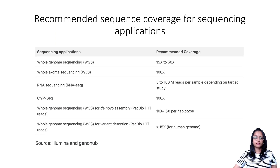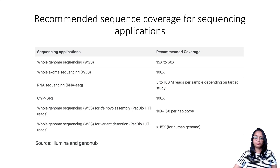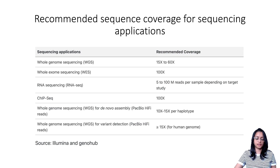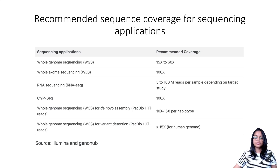Coverage will vary depending on the type of next-generation sequencing data and the research application. Generally, more coverage is needed when trying to identify rare variants — for example, detecting cancer mutations in circulating tumor DNA in the plasma of cancer patients. The appropriate coverage is determined on a case-by-case basis and also varies depending on whether the data is whole genome sequencing, exome sequencing, ChIP-seq, or RNA-seq. For RNA-seq, the required number of reads depends on genome size and the number of known genes and transcripts.